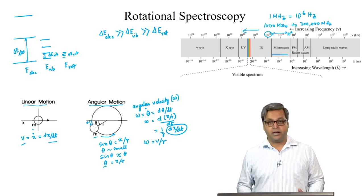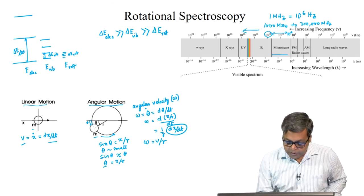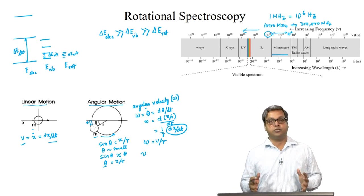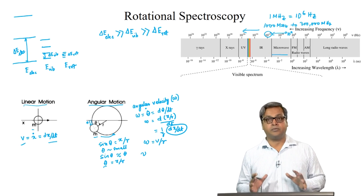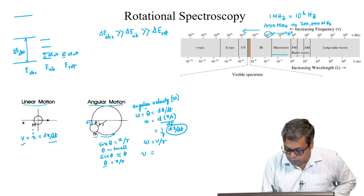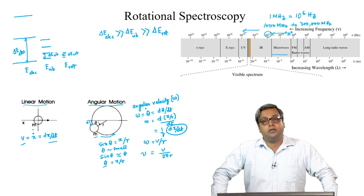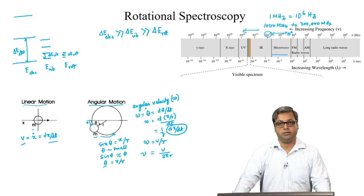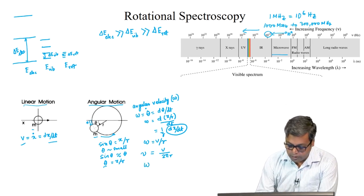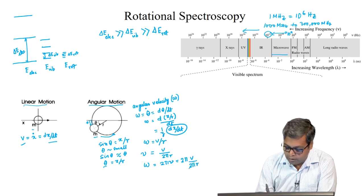We can also calculate that for a particle moving with a linear velocity V, the frequency nu — how many revolutions of circumference 2πr are completed per unit time — is nu equals V divided by 2πr. And as for every revolution it sweeps out an angle of 2π, we know that omega equals 2π nu. So we can write omega equals 2π times V/2πr, and again show that omega equals V/r.